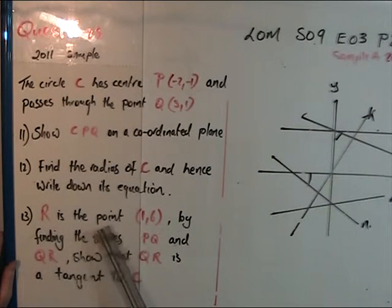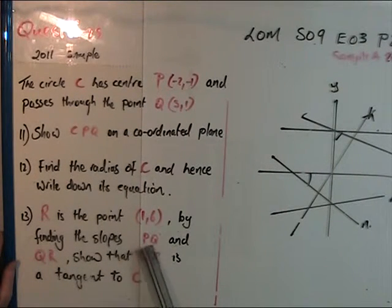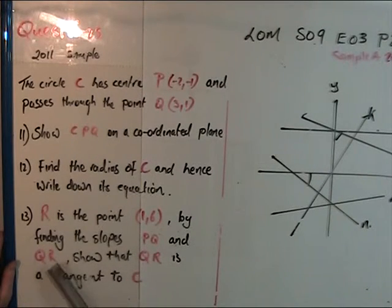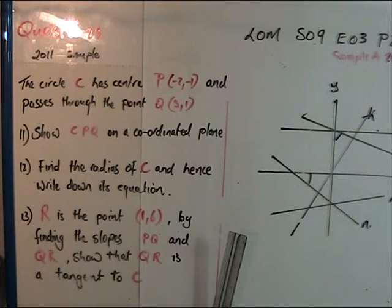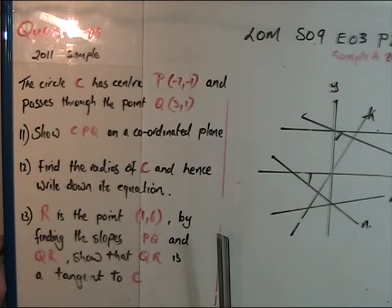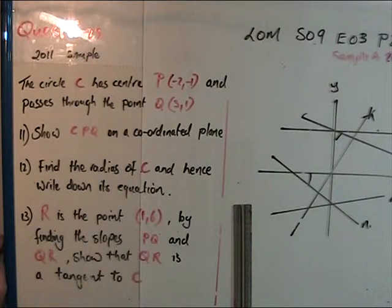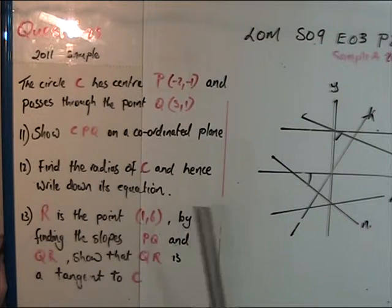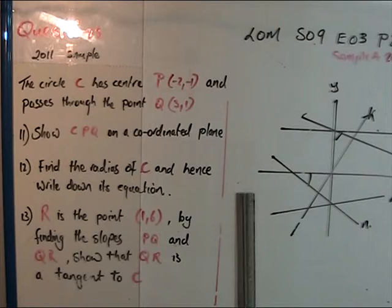If R is the point (1,6), by finding the slopes PQ and QR, show that QR is a tangent to C. You have a couple of choices: if the product of the slopes equals -1, it's a tangent cutting at one point. You can also use simultaneous equations to see if there's only one point of intersection.